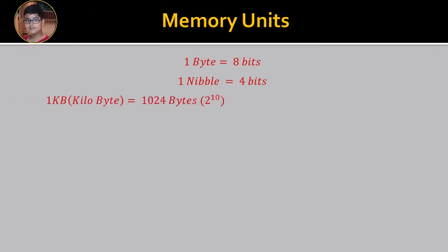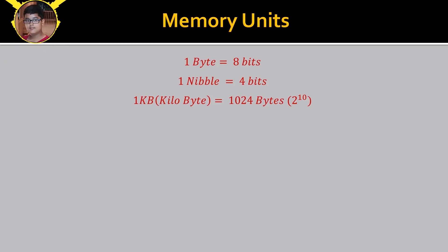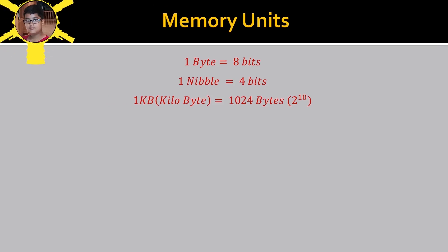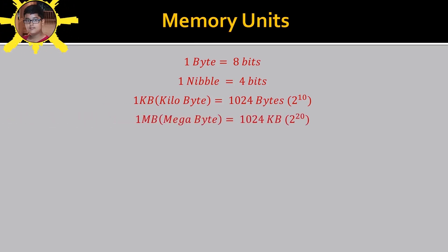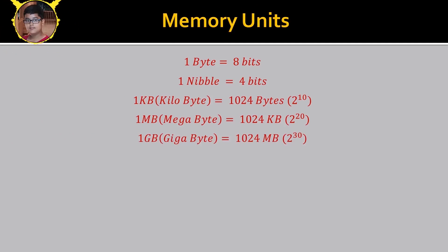One nibble is equal to four bits. One KB or kilobyte is equal to 1024 bytes, which is 2 raised to the power 10. In daily life one kilo is said to be 1000, but in computer language it is 1024. The reason is that a computer is a binary machine, so the figure 1024 equals 2 to the power 10. One MB or megabyte is equal to 1024 KB, which is 2 raised to the power 20.